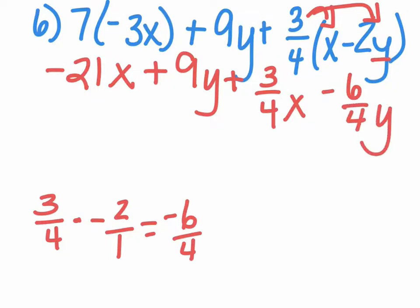Now we're going to combine our like terms. Negative 21x and three-fourths x—we're going to find the difference, so we'll do negative 21 minus three-fourths.